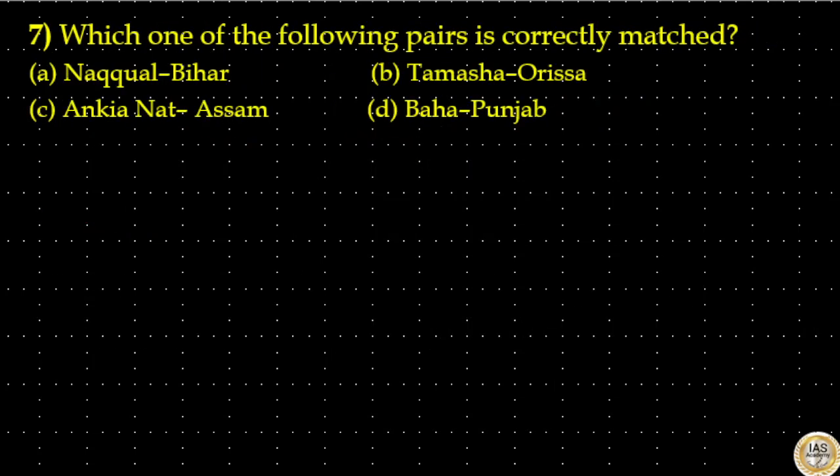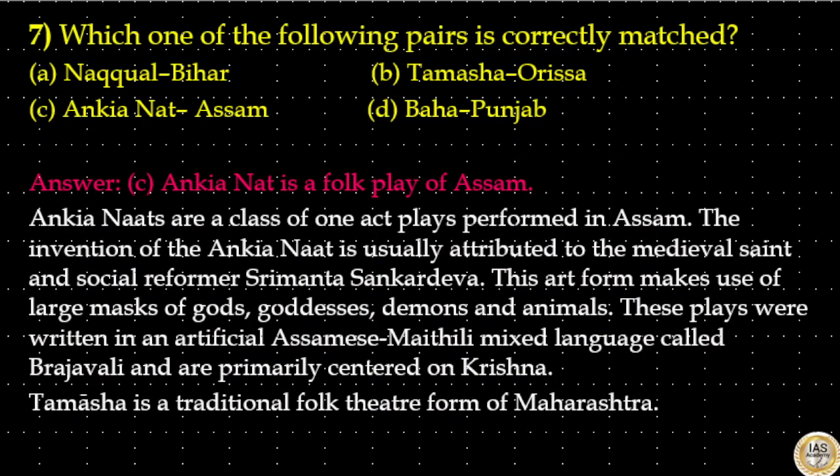Which one of the following pairs is correctly matched? Option A: Naikwal — Bihar. Option B: Tamasha — Orissa. Option C: Ankiya Naat — Assam. Option D: Baha — Punjab. The answer is option C: Ankiya Naat. Ankiya Naats are a class of one-act plays performed in Assam. The invention of the Ankiya Naat is usually attributed to the medieval saint and social reformer Shankaradeva. This art form makes use of large masks of gods, goddesses, demons and animals. These plays were written in an artificial mixed Assamese language called Brajavalli and are primarily centered on Krishna.